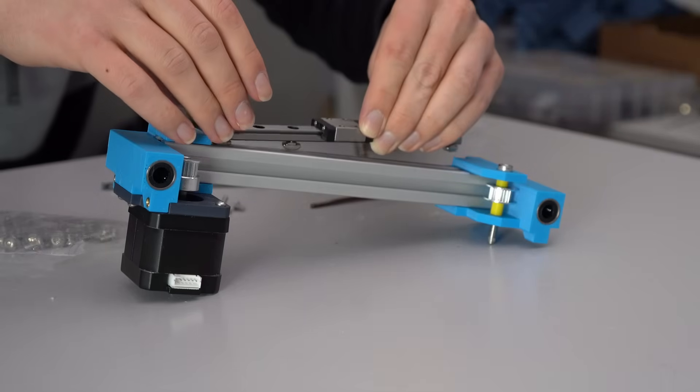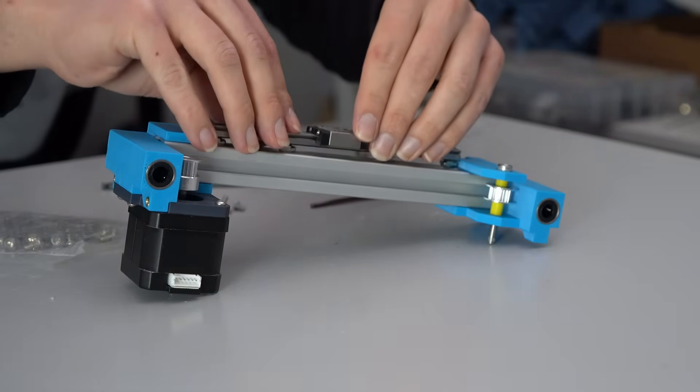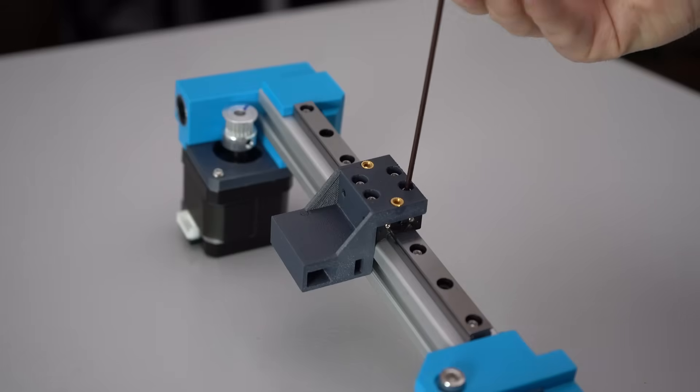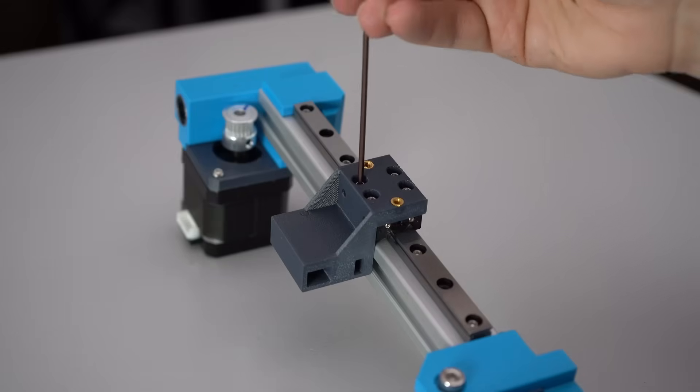You can now bolt the linear rail onto the front of the 2020, with M3x8 screws and some T-nuts. The X-carriage bolts onto the linear rail with four M3x6 screws, and make sure you have those heat set inserts in, otherwise you won't have anything to bolt your tool head to.